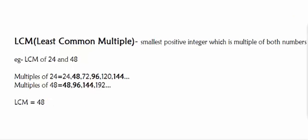Least Common Multiple, or LCM: The LCM of two numbers a and b is the smallest positive integer which is a multiple of both numbers.